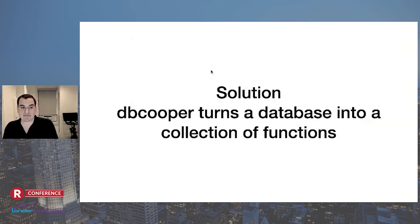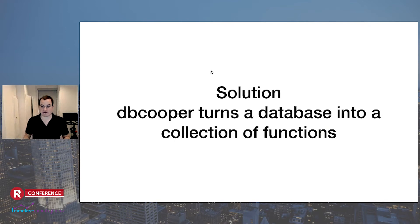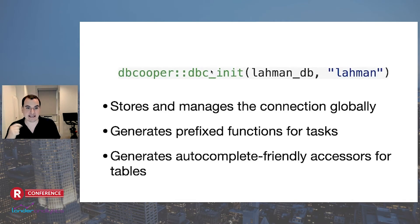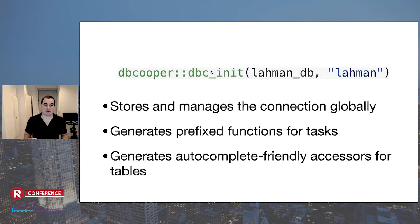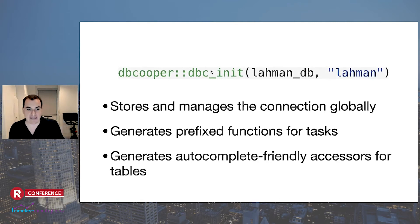That's where DB Cooper enters. DB Cooper turns a database into a collection of functions so that you can intuitively work with it. It does that through a one-liner: the `dbc_init()` function. `dbc_init()` takes that connection and then takes a string that is a prefix for the functions — something that describes it. What DB Cooper takes care of is it stores and manages that connection globally, so I'm no longer thinking about the connection object. Then it generates prefixed functions and autocomplete-friendly accesses for the tables.